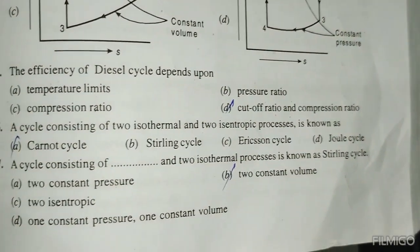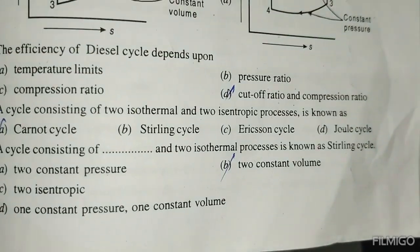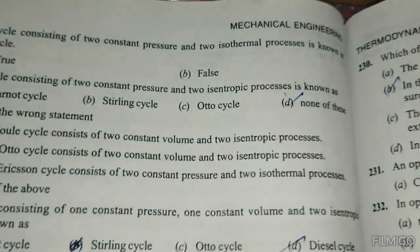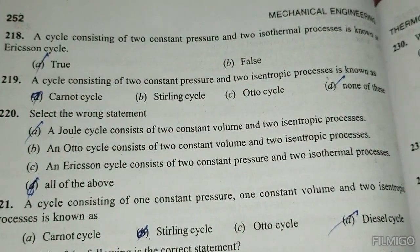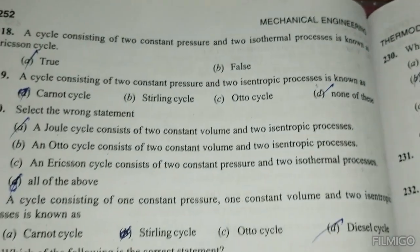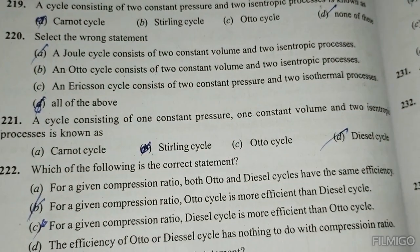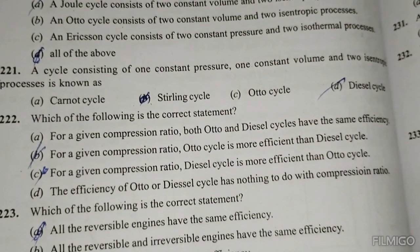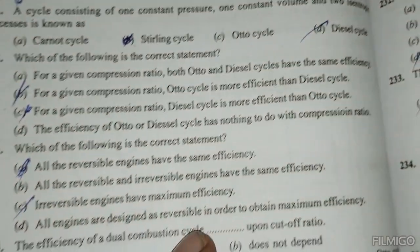The cycle consisting of 2 isothermal and 2 isentropic processes is known as the Carnot cycle. The cycle consisting of 2 isothermal and 2 constant volume processes is known as the Stirling cycle. A cycle consisting of 2 constant pressure and 2 isothermal processes is known as the Ericsson cycle. A cycle consisting of 2 constant pressure and 2 isentropic processes is none of the above. A Joule cycle consists of 2 constant pressure and 2 isentropic processes. For a given compression ratio, the Otto cycle is more efficient than the Diesel cycle.